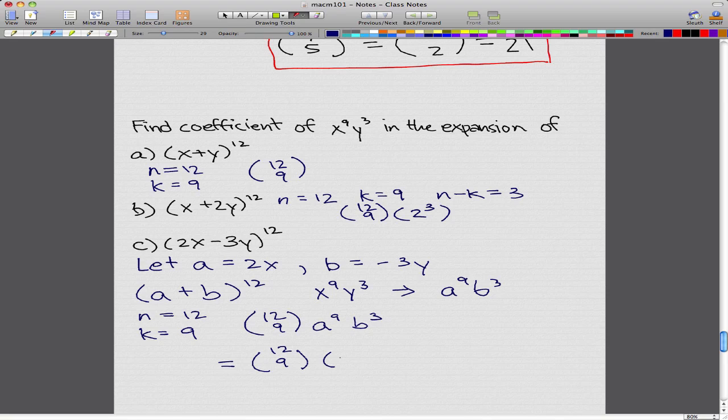We just take the a and pop in (2x)^9. Because we have a let statement saying that a equals 2x, we can substitute 2x for a. And we do the same for b. So b would be -3y to the power of 3.